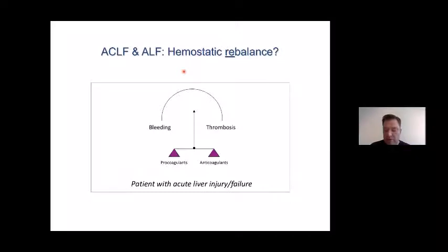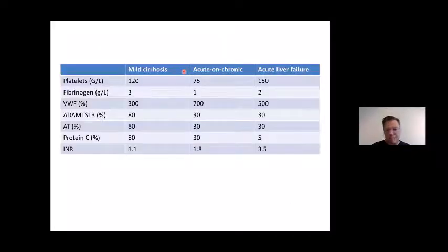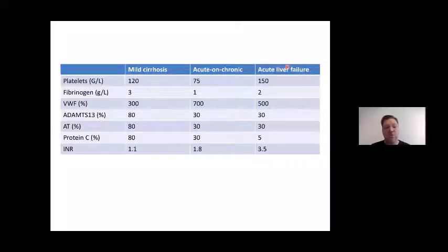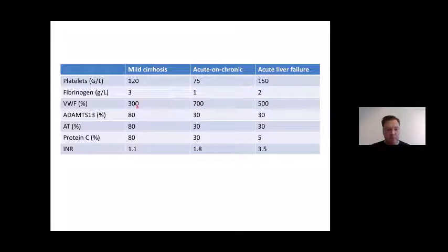I will try to show you data from both the clinic and the laboratory. Comparing data from my center on patients with mild cirrhosis, ACLF, and acute liver failure: in mild cirrhosis, platelet count and fibrinogen are relatively normal, and these really decrease in acute and chronic liver failure, but not so much in ALF. The platelet-adhesive protein von Willebrand factor is already elevated about threefold in mild cirrhosis, and these values go up even further in sicker patients.